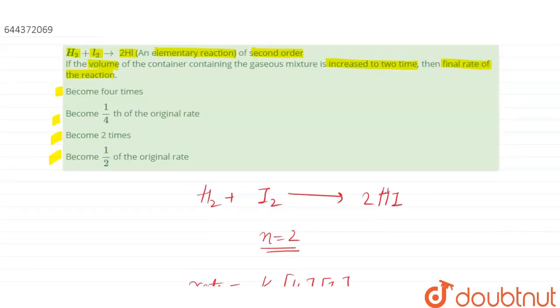Let us see the options that have been given to us. First option: the final rate of the reaction becomes 4 times? No. Becomes 1/4th of the original rate? Yes.